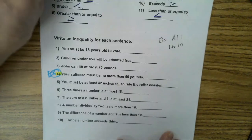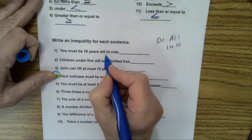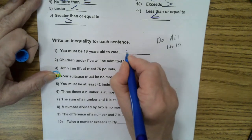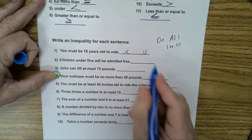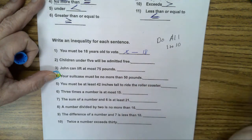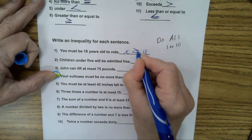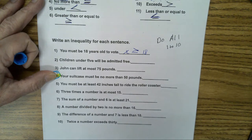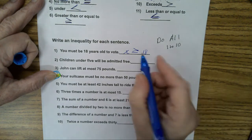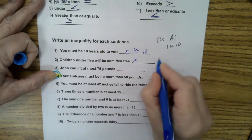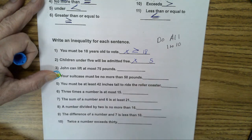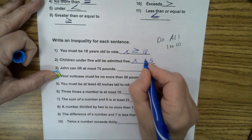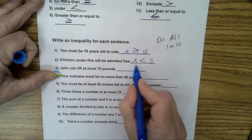Now you had to do these problems for homework. You must be 18 years old to vote. I'm going to use the variable x and 18. Can you be 18 to vote? Yes. So it gets this. Do you have to be older or younger? Older. So x gets the big end. 18 gets the little point. Children under 5 will be admitted free. We have x will represent children and 5. Can you be 5 and be admitted? No. Only under, so it's going to look like this. X has to be less than 5.